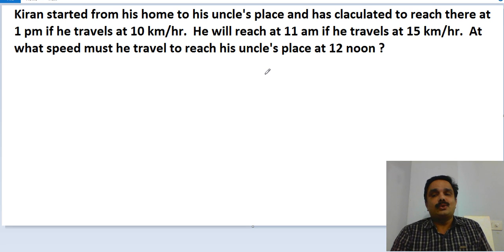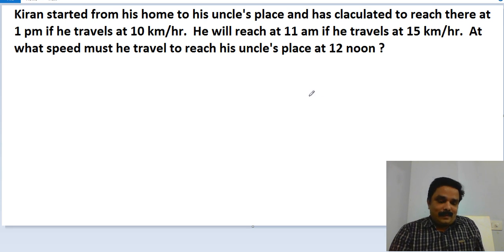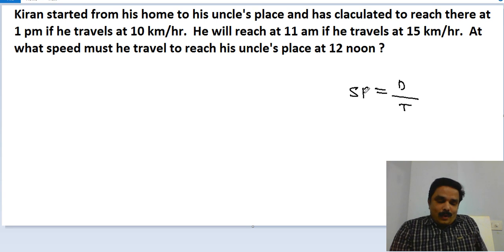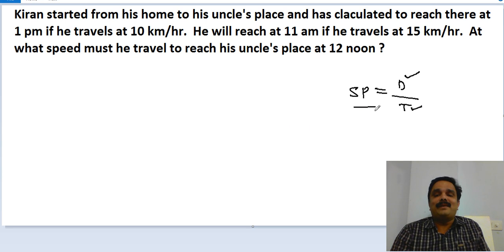Now make the question into two parts: one is information, the other is the question. Here, 'at what speed must he travel to reach there at 12 noon' is the question. Basically I need to find out the speed. Speed is equal to distance divided by time. To answer this question I need to find out the distance and the time taken to cover that distance, and automatically I can get the speed.